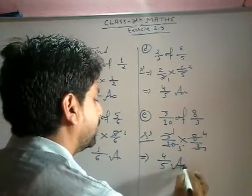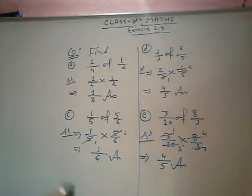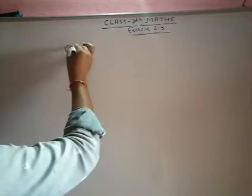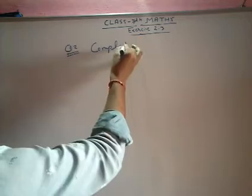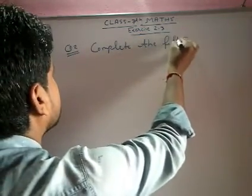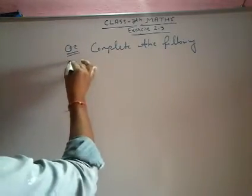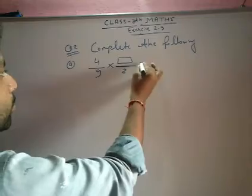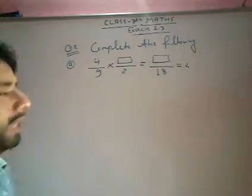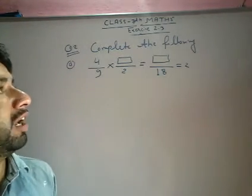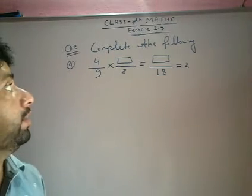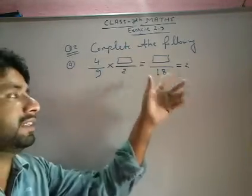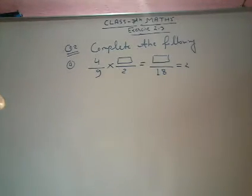Next, second question: complete the following. Question is 4 upon 9 into dash upon 2 equals to dash upon 18 equal to 2. Complete the following.